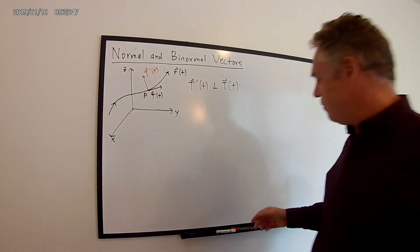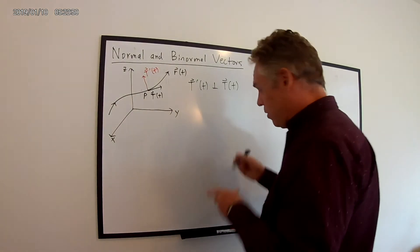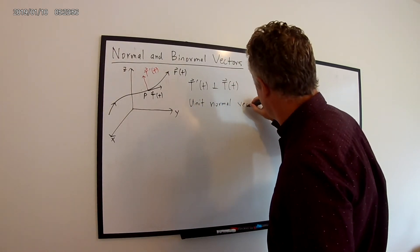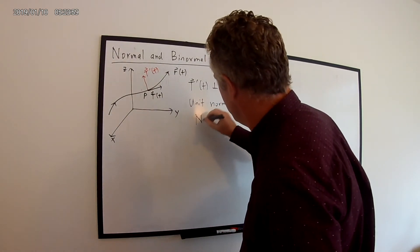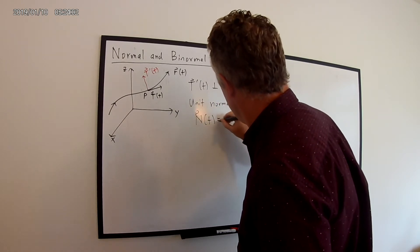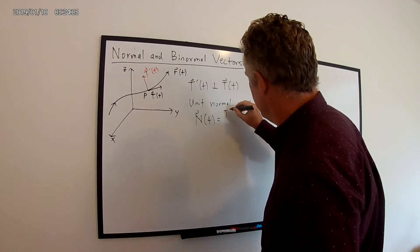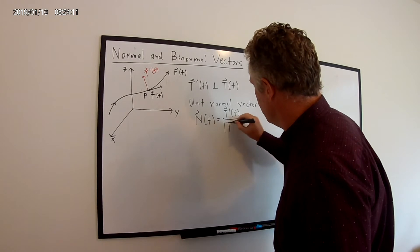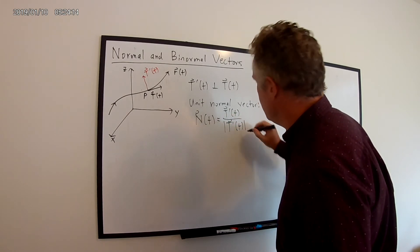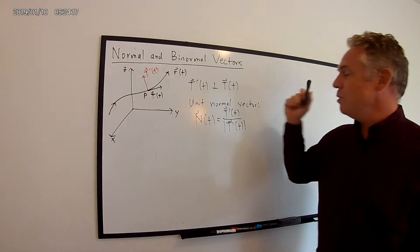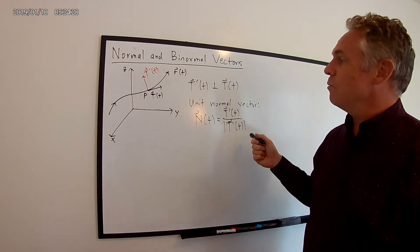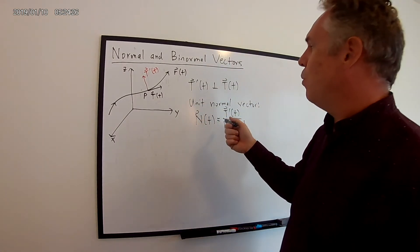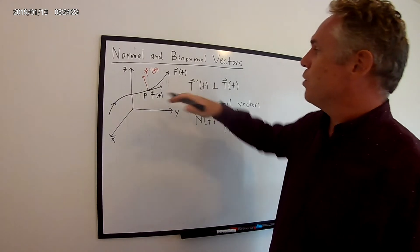This leads us to defining something called the unit normal vector, denoted N(t). This is defined to be the derivative of the unit tangent vector T'(t) divided by the magnitude of T'(t). The unit normal vector is perpendicular to the unit tangent vector, has a magnitude of 1, and points in the direction in which the curve is bending.